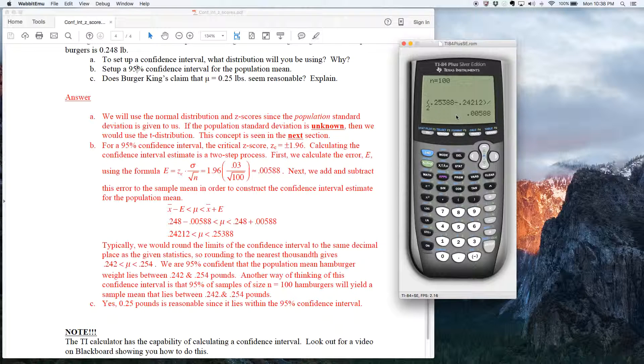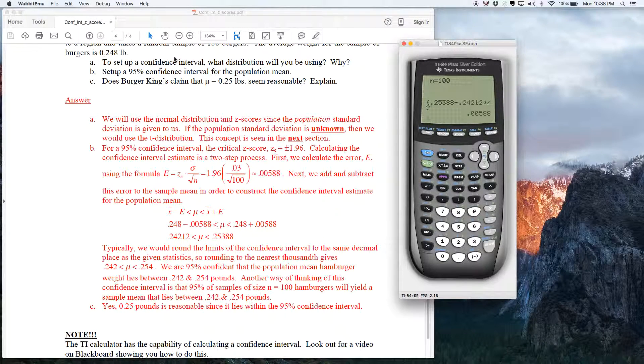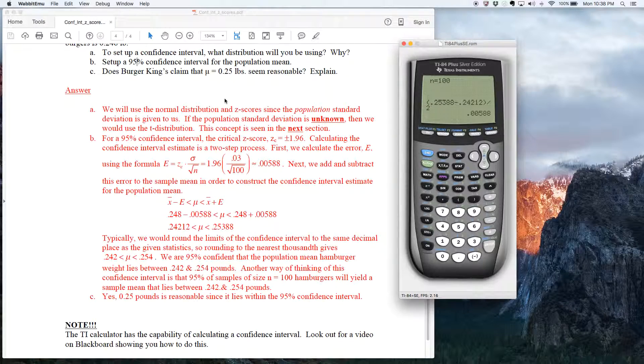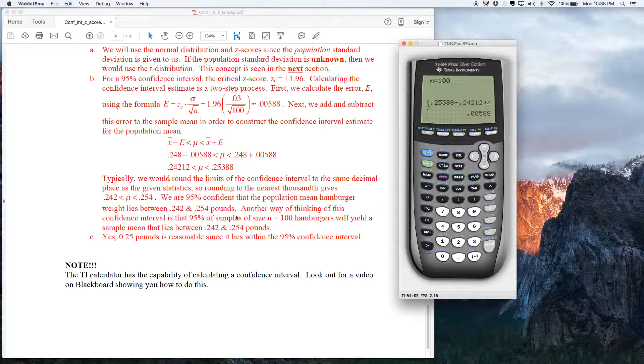So actually, even though when you use the calculator, it doesn't give you the error directly, you can still find the error by subtracting the limits of the confidence interval and cutting it in half. And this final question here. This question did not ask you to interpret this. I think we should probably say what this means. So I put it down here. This is like a textbook definition. We are 95% confident that the population mean hamburger weight lies between those two numbers.